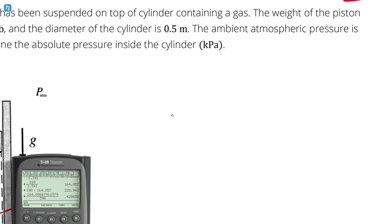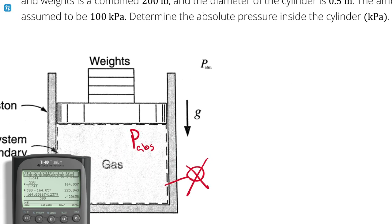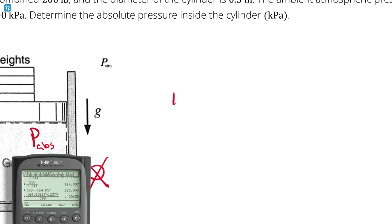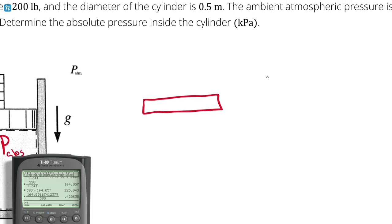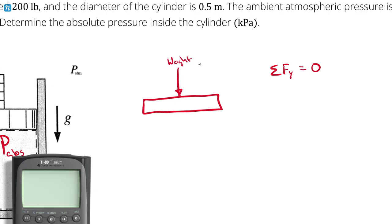Let's treat this as a statics problem. If the piston is in equilibrium and not moving, then the sum of the forces in the y-direction must equal zero. I have some force pushing down in the form of the weight of the piston and the weights on top combined.